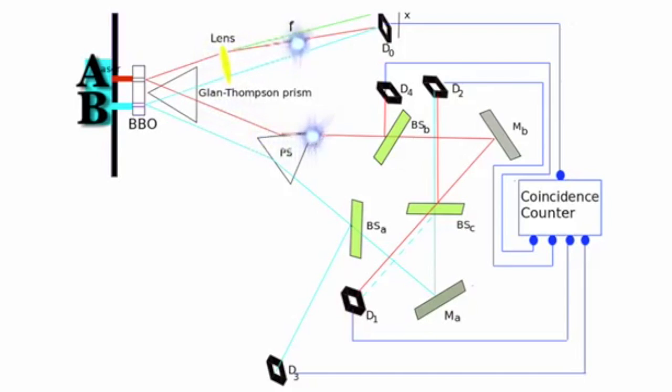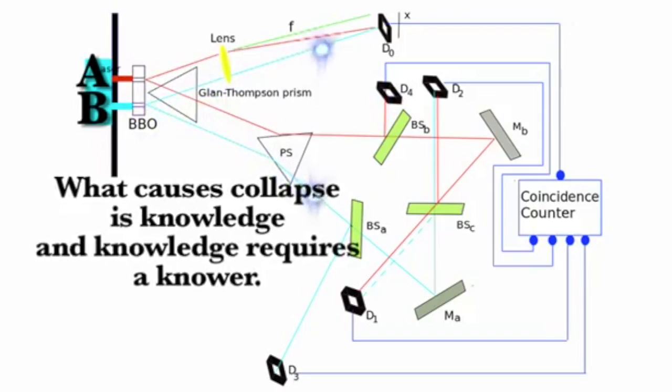Whereas at D three and D four, the photon only goes through one slit, because we know the path information. The particles act in a way that correlates to our knowledge. See what causes collapse is knowledge, and knowledge requires a knower.